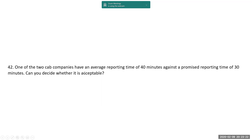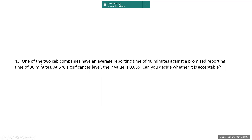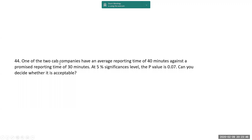One of the two cab companies has an average reporting time of 40 minutes against the promised reporting time of 30 minutes. Can you decide whether it is acceptable? We have to do hypothesis testing — is it by chance or by significance? At 5% significance level, if the p-value is 0.035 — lower than 0.05 — reject it. If the p-value is 0.07, the p-value is more, so the null hypothesis is accepted.